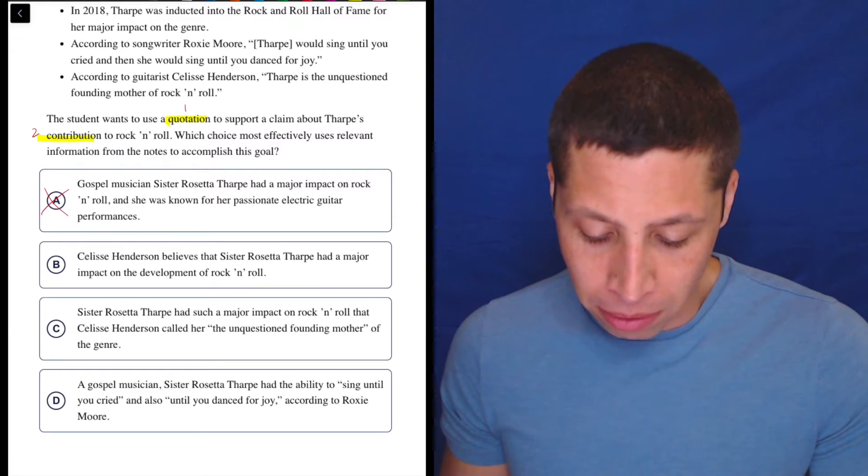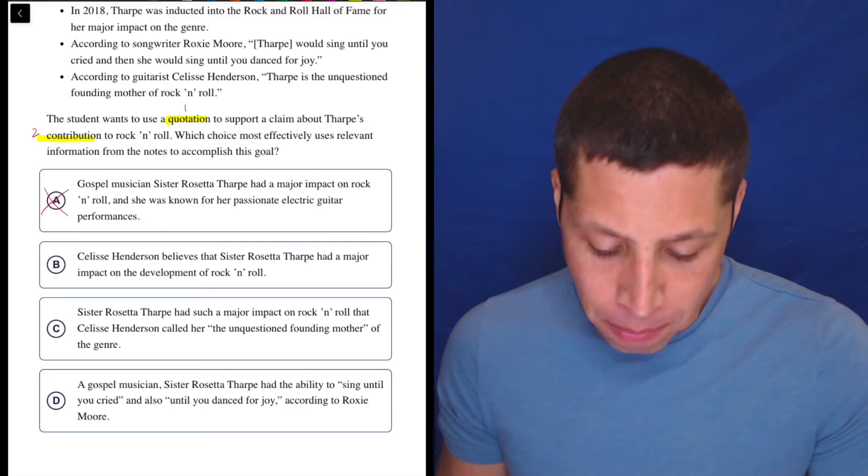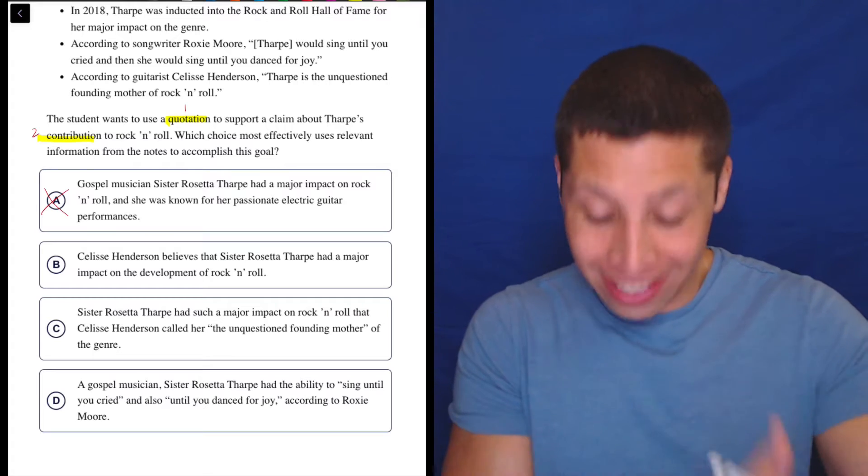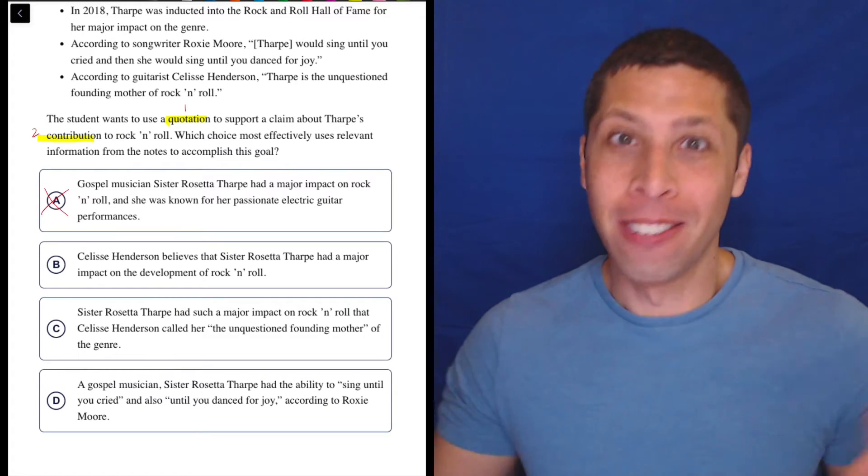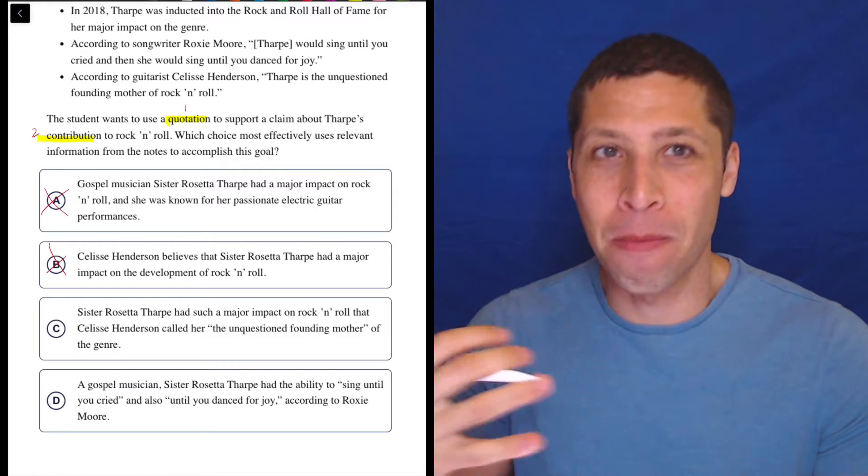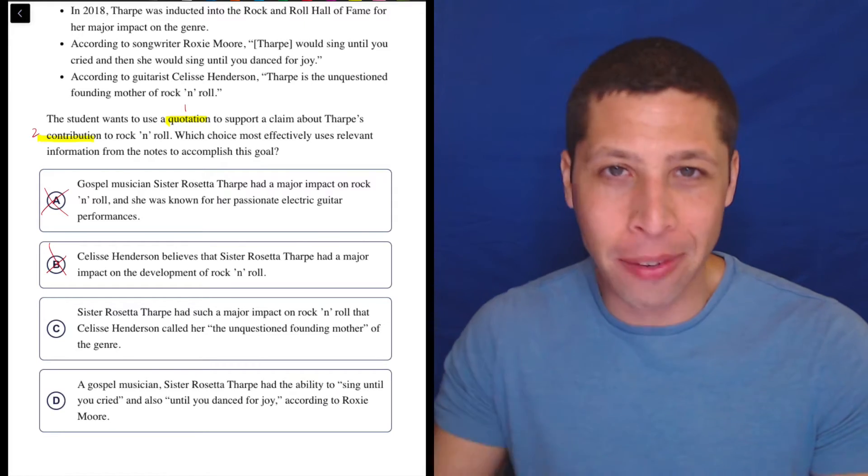B: Solis Henderson believes that Sister Rosetta Tharp had a major impact on the development of rock and roll. Well, if we had a quote from Solis Henderson saying that, different story, but we don't—there's no quote there. That part is important; it's in the question, we need to have it in the answer choice as well.